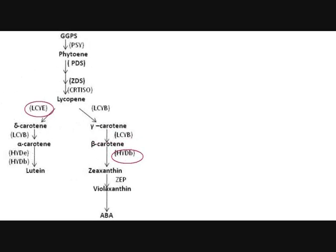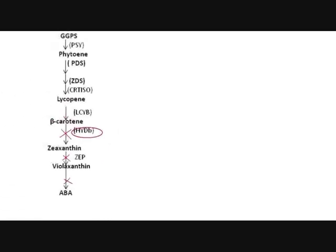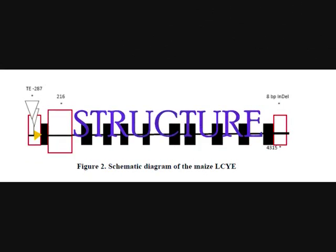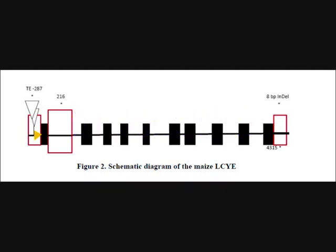We can also design a primer on the hydroxylase B gene so that beta-carotene is not converted to abscisic acid, thus increasing the beta-carotene content in maize. Next, we need to know the structure of the LCYE gene. It consists of 10 exons spanning up to 3640 base pairs. The putative transcript sites are depicted with yellow arrows and the translated exons as black squares.